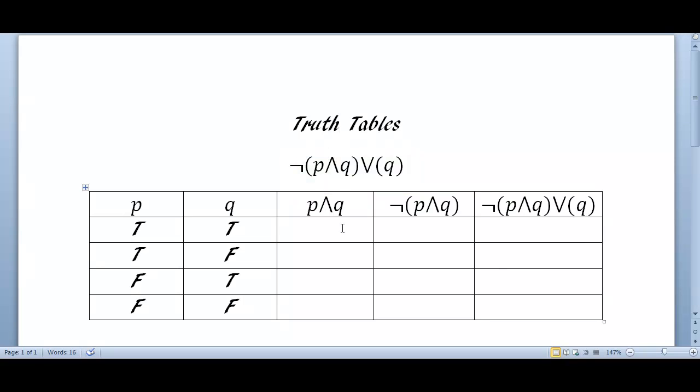Then you break it into pieces. The first piece is always P or Q, and these are always filled in in the exact same way, and I want you to notice the pattern. The pattern is this: you want to get all possible combinations of true or false for both P and Q.